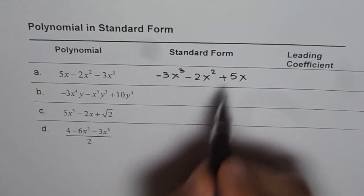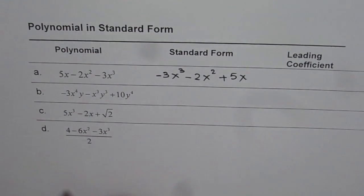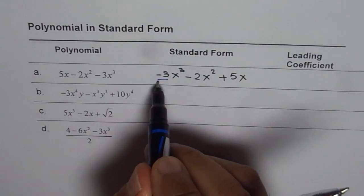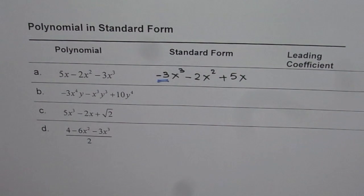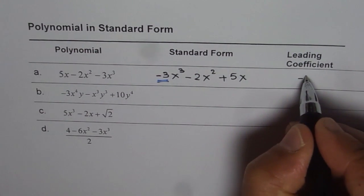So this polynomial is now written in standard form. Leading coefficient is the number associated with the leading term, the first term when you write your polynomial in standard form. So the leading coefficient here is negative 3.